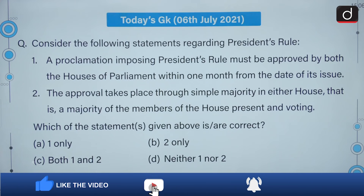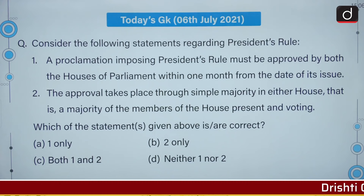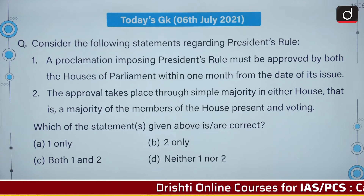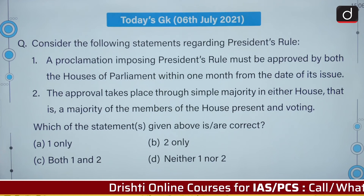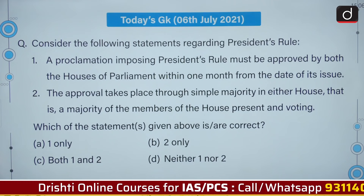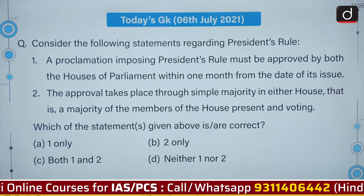Consider the following statements regarding President's Rule. Statement one: a proclamation imposing President's Rule must be approved by both Houses of Parliament within one month from the date of its issue. Statement two: the approval takes place through simple majority in either house, that is a majority of the members of the house present and voting. We have to select the correct statement.